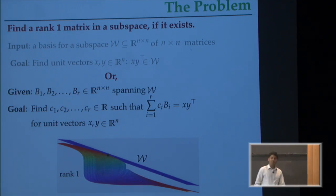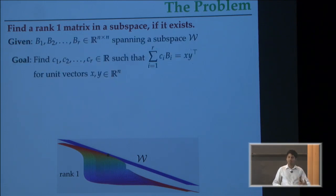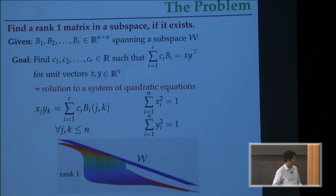Before going to that, this question is about finding a point in the span of these given matrices which is rank one. I can state it as a problem of finding a solution to a system of quadratic equations. To spell it out here: x and y are unit vectors, so Σxᵢ² = 1 and Σyᵢ² = 1. Then these equations are quadratic equations in your variables x₁ through xₙ and y₁ through yₙ, and state that xy transpose should be equal to some Σcᵢbᵢ. The bᵢ's are given to you, they're fixed things that you get as input. You want to find the cᵢ's and x and y which satisfy these quadratic equations.